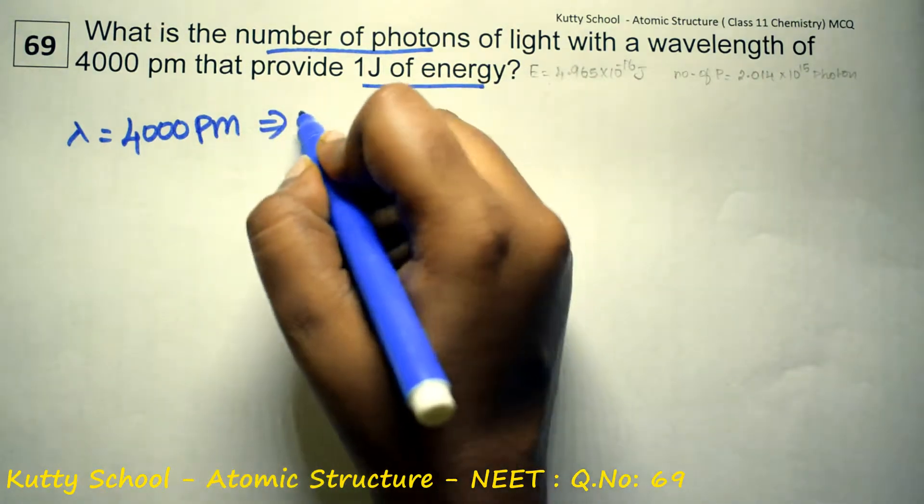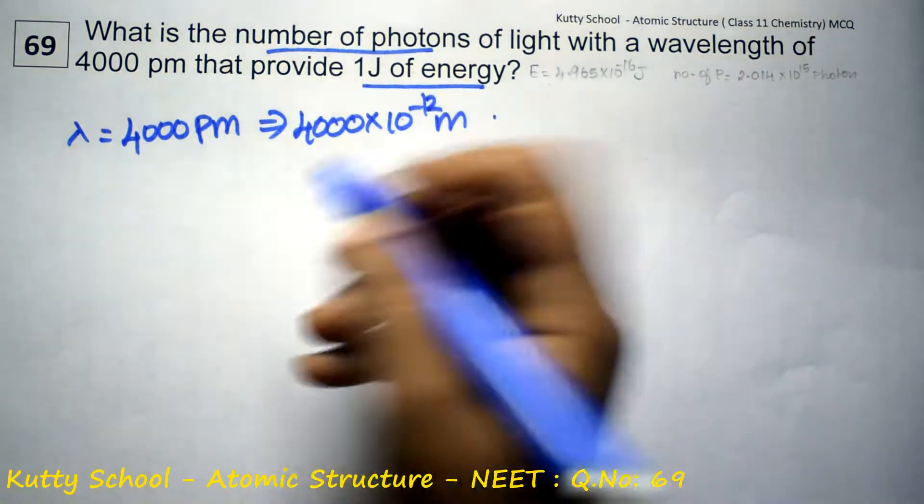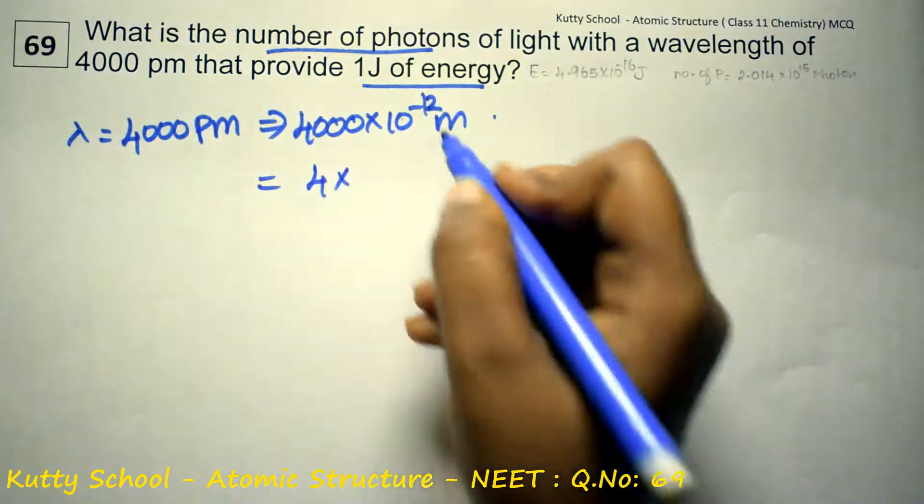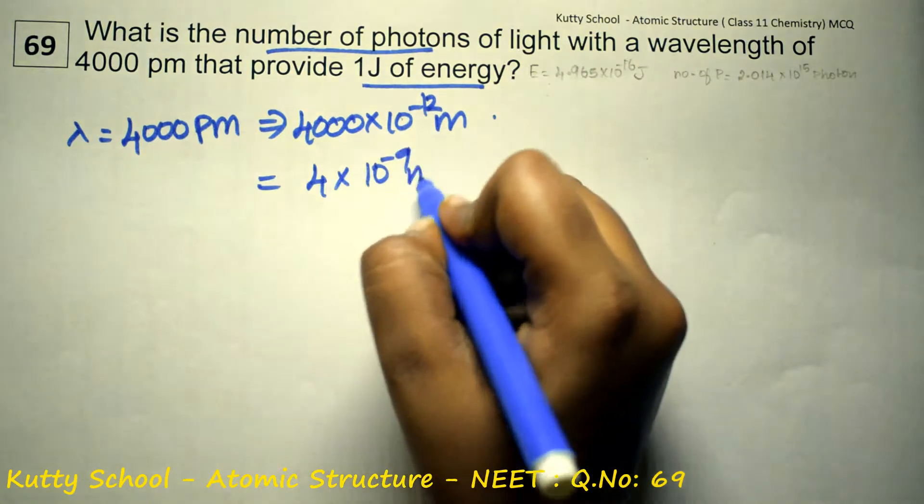Picometer means 4000 into 10 power minus 12 meter. So this gives us 4 into 10 power minus 9 meter. This is lambda.